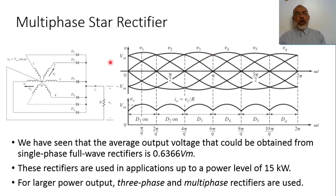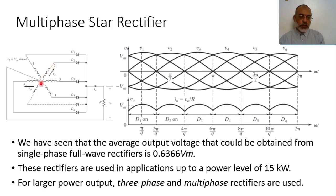All these coils are connected at a single node, which is the neutral node. The potential of each coil is measured with respect to this neutral or common connecting node.